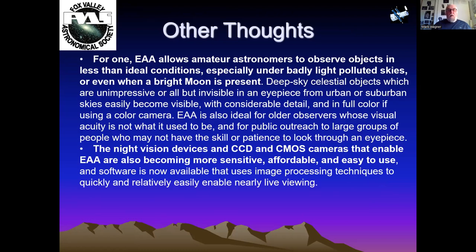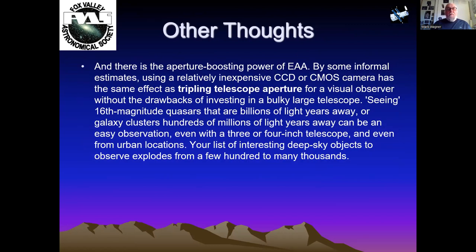Some other thoughts: EAA allows amateur astronomers to observe objects in less than ideal conditions, especially under badly light-polluted skies. Night vision devices and CCD and CMOS cameras that enable EAA are also becoming more affordable and easier to use. EAA theoretically gives you on the same telescope a tripling of the telescope aperture compared to what you'd get as a visual observer, and I can attest to that with the Revolution Imager.